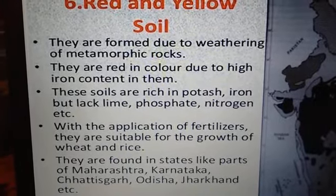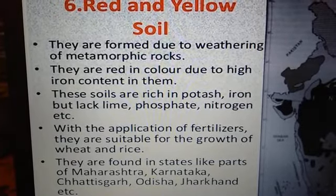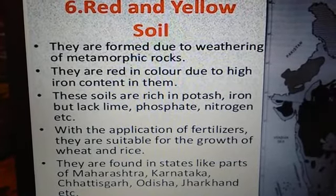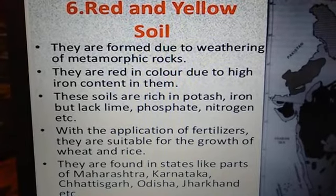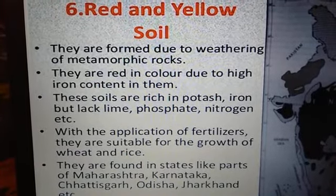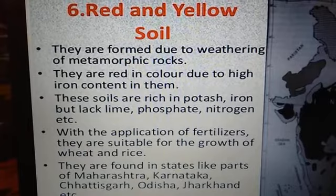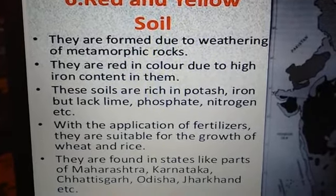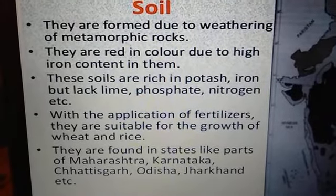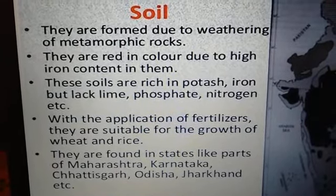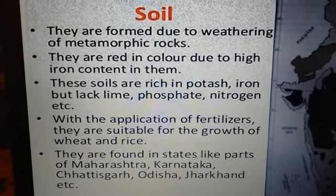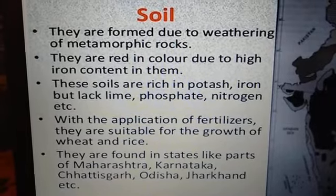Red and yellow soils are rich in potassium and iron but lack lime, phosphate, and nitrogen. With the application of fertilizers, they are suitable for the growth of wheat and rice.